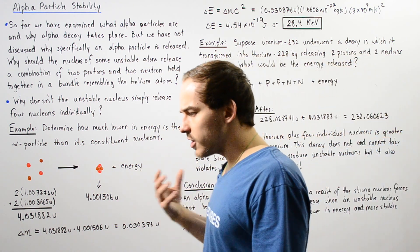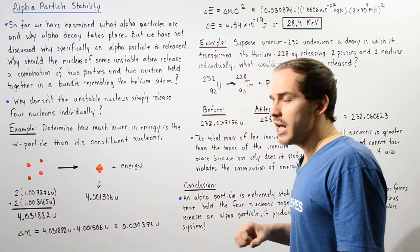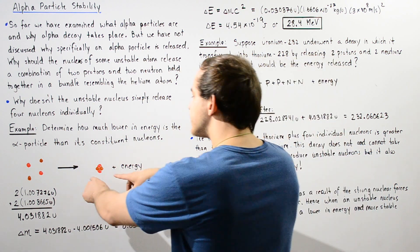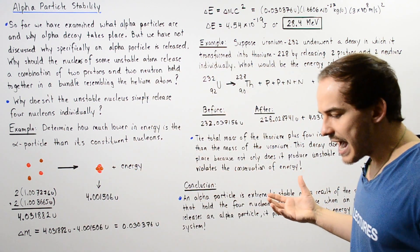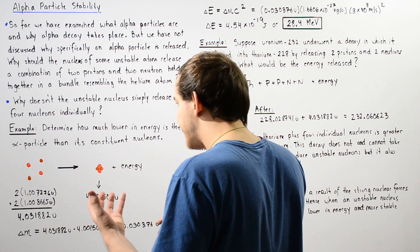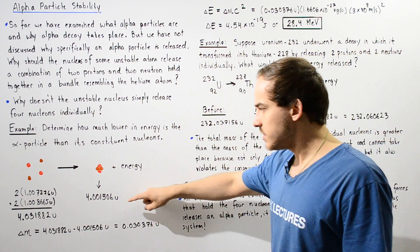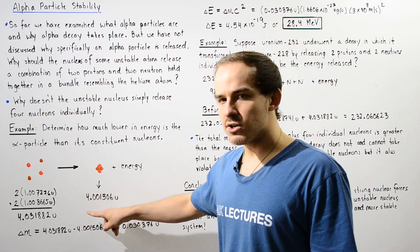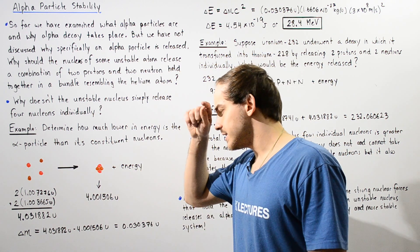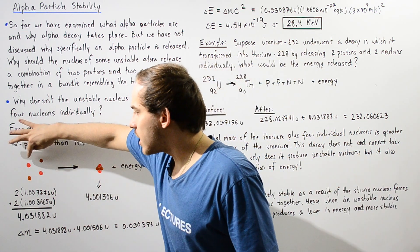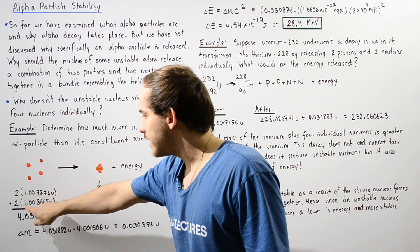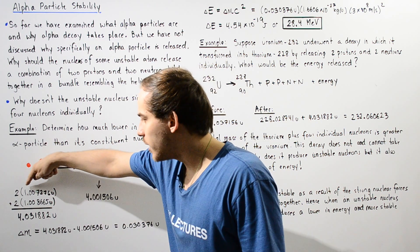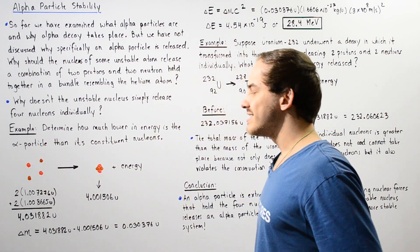So basically we're going to take the approach of calculating the mass of the reactants and comparing that mass to the mass of our product. Now if we examine some table that can give us the mass of our alpha particle, we'll see that the mass of an alpha particle is given by 4.001506 unified atomic mass units. Now the mass of a single neutron is 1.008665U and the mass of a single proton is 1.007276U.